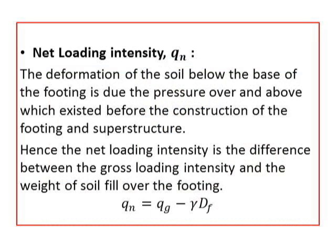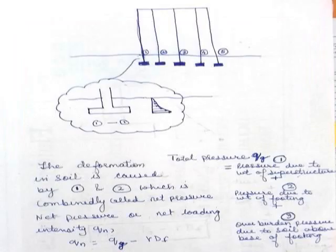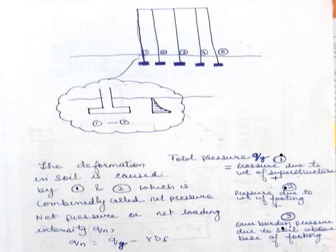Therefore we need the term net loading intensity. It is the difference between gross loading intensity and the weight of soil fill over the footing. It is denoted by Q_N: net loading intensity Q_N = Q_G − γ·D_F. The slide explains the same — Q_N = Q_G − γ·D_F.